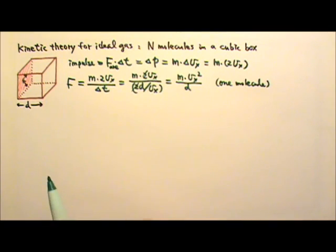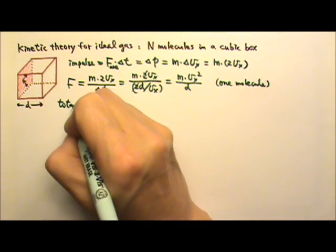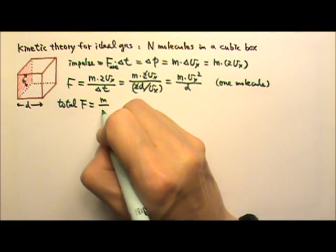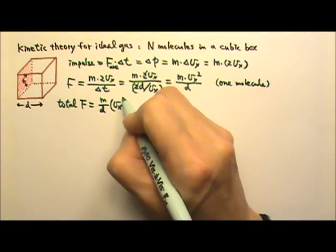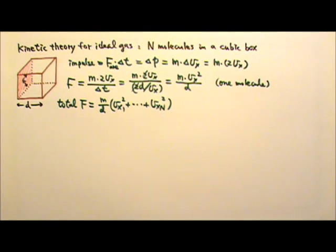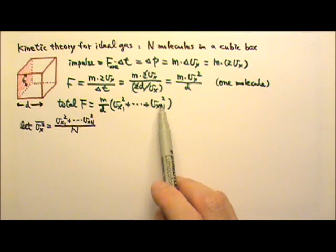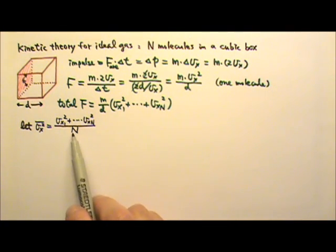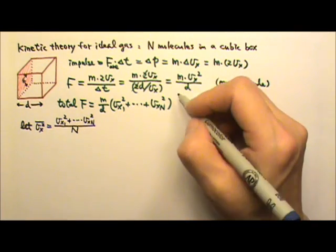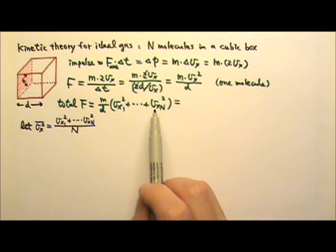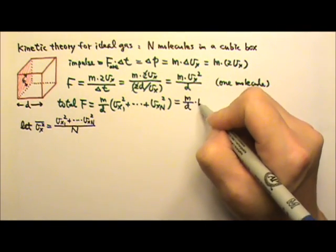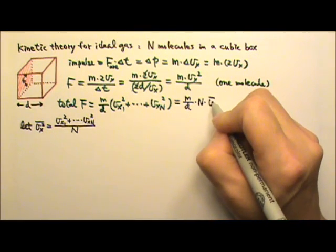There are n molecules in the box. So the total force acting on this face of the box is m over d, times the sum of vx squared from the first particle all the way to the nth particle. Since this is the sum of all the vx squared, I add them all together and divide by n to get the average value — the average of vx squared. So I get m over d times n times the average of vx squared.